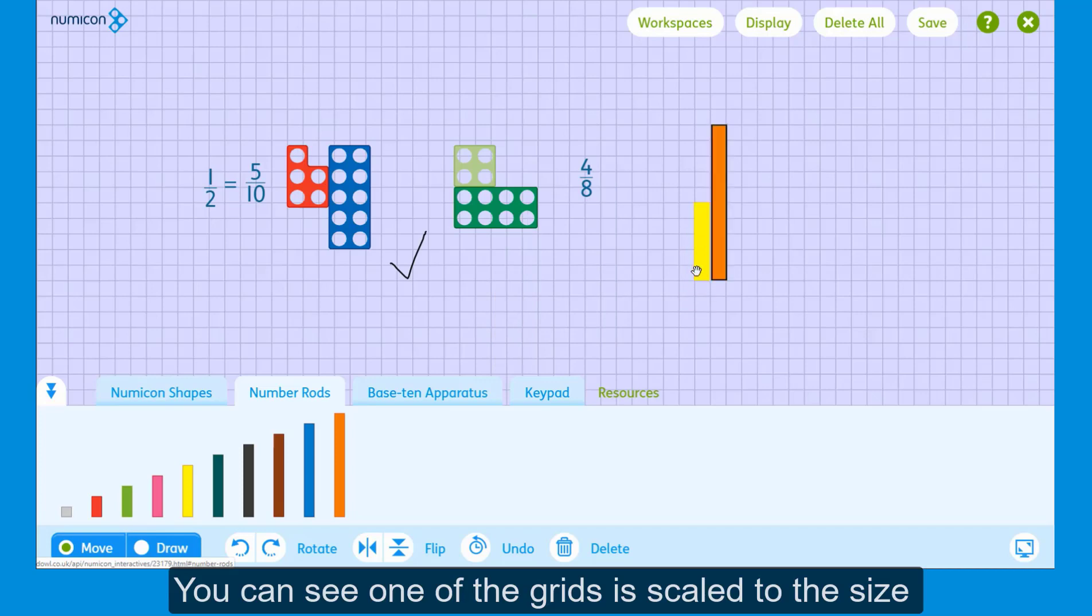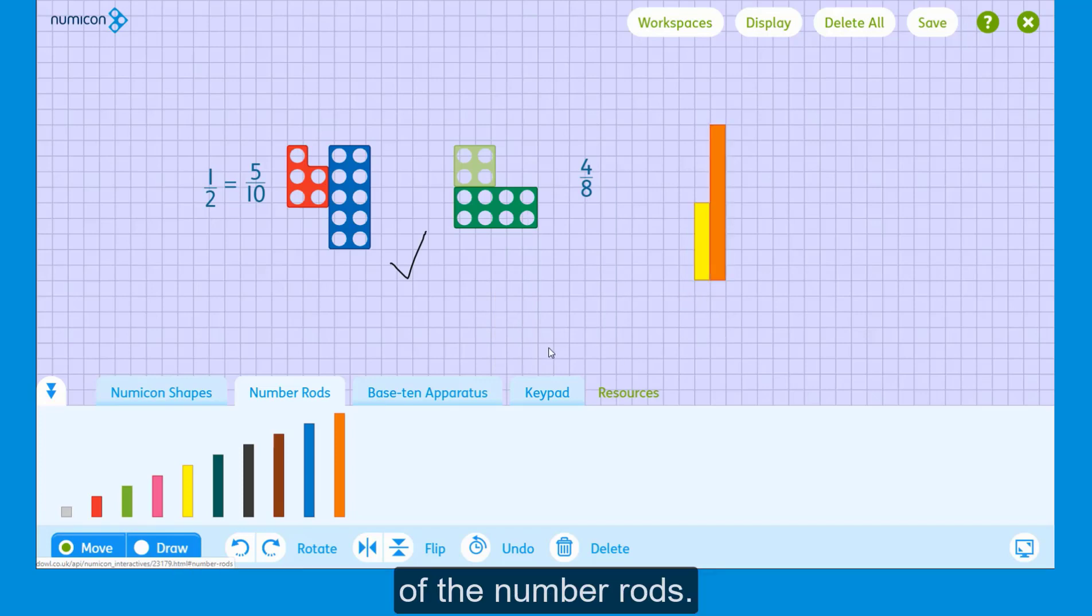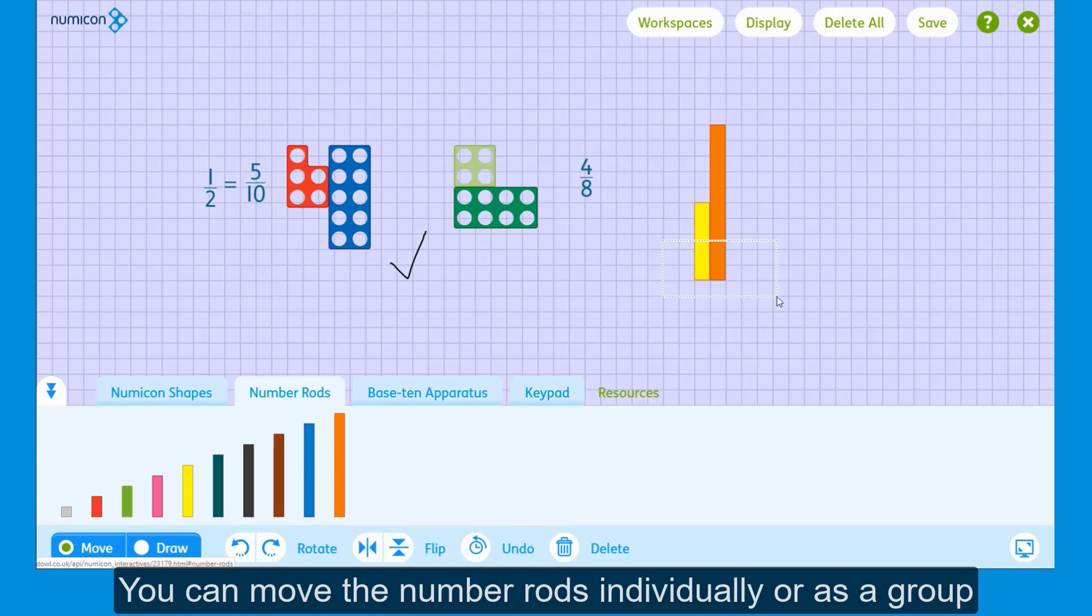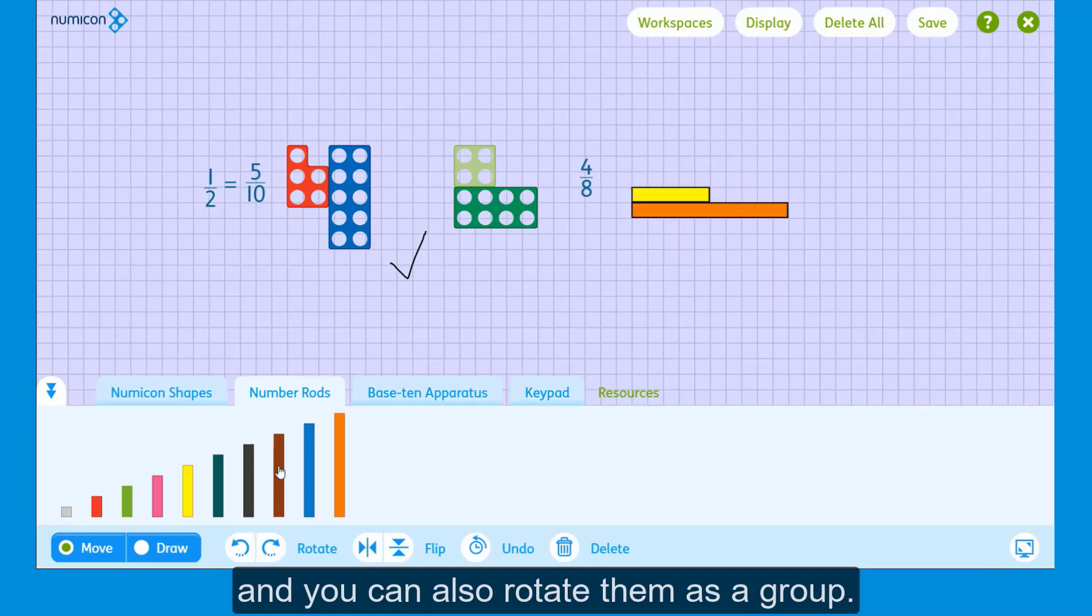You can see one of the grids is scaled to the size of the number odds. You can move the number odds individually or as a group, and you can also rotate them as a group.